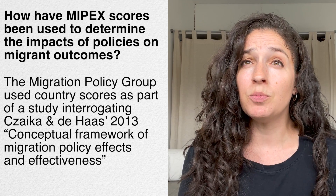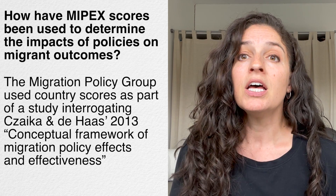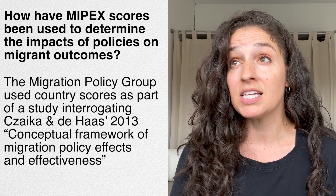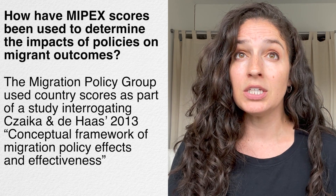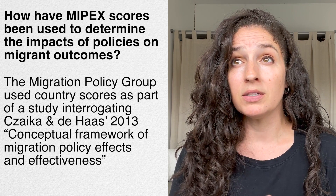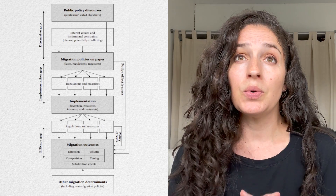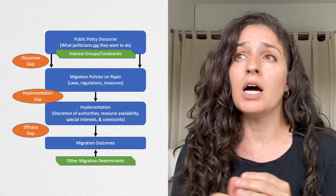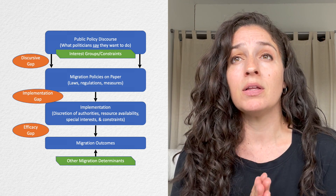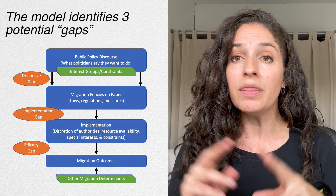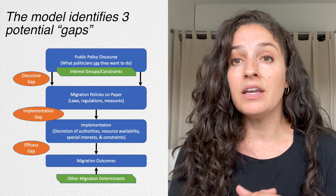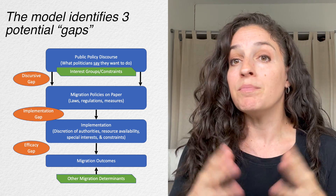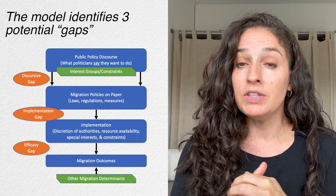Now let's look at how MIPEX scores have been used to determine the impact of policies on migrant outcomes. The Migration Policy Group used country scores as part of a study interrogating work previously done by Matthias Zeica and Hein de Haas in their 2013 paper on a conceptual framework for migration policy effects and effectiveness. The model shown here is an original and simplified form that illustrates a path from discourse to policies on paper, then to policy implementation, and finally to policy outcomes. This model identifies three gaps in policy implementation and their outcomes.